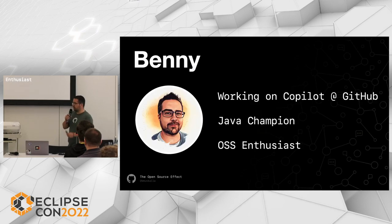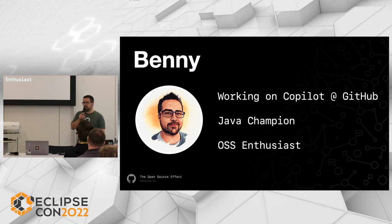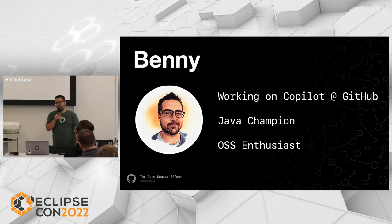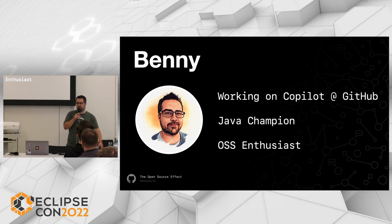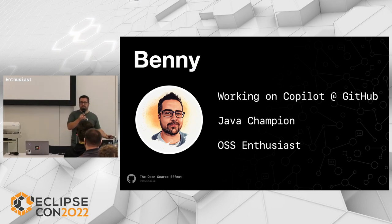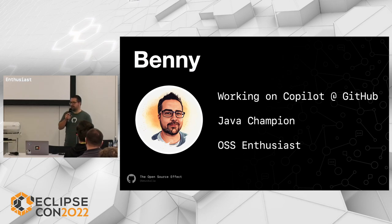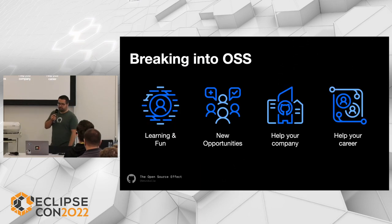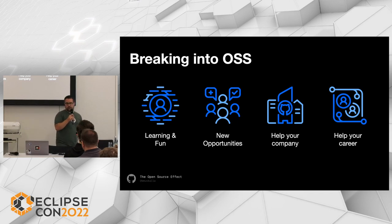My name is Benny, I'm working for GitHub nowadays on the Copilot extension and GitHub for VS Code. I'm a Java Champion and I work a lot on open source software both in my day-to-day job and in my free time. I asked myself: how did I get into open source, why did I get into it, and how did it help me? There are essentially four pillars of open source I found very relevant for me.